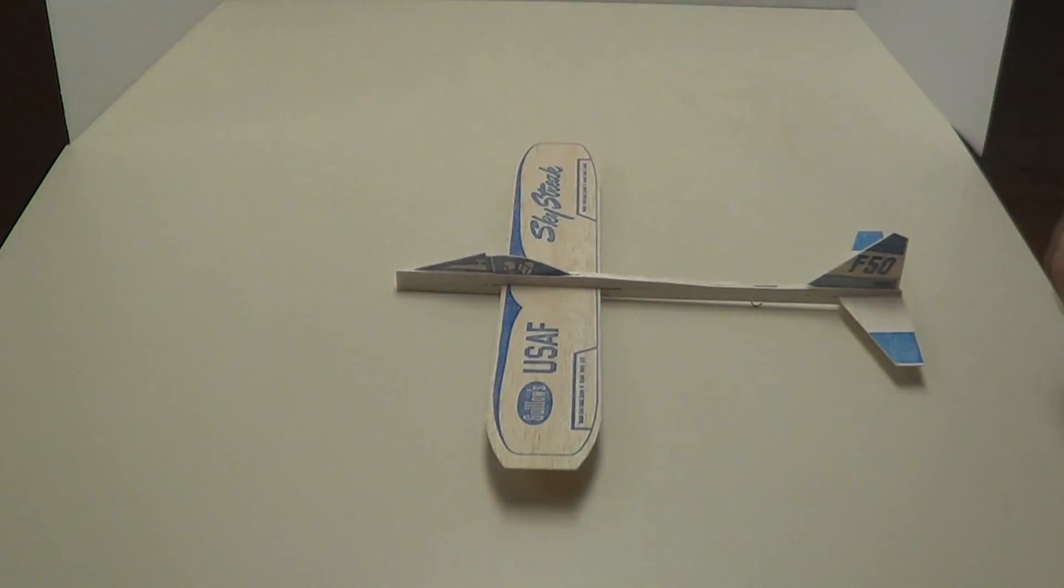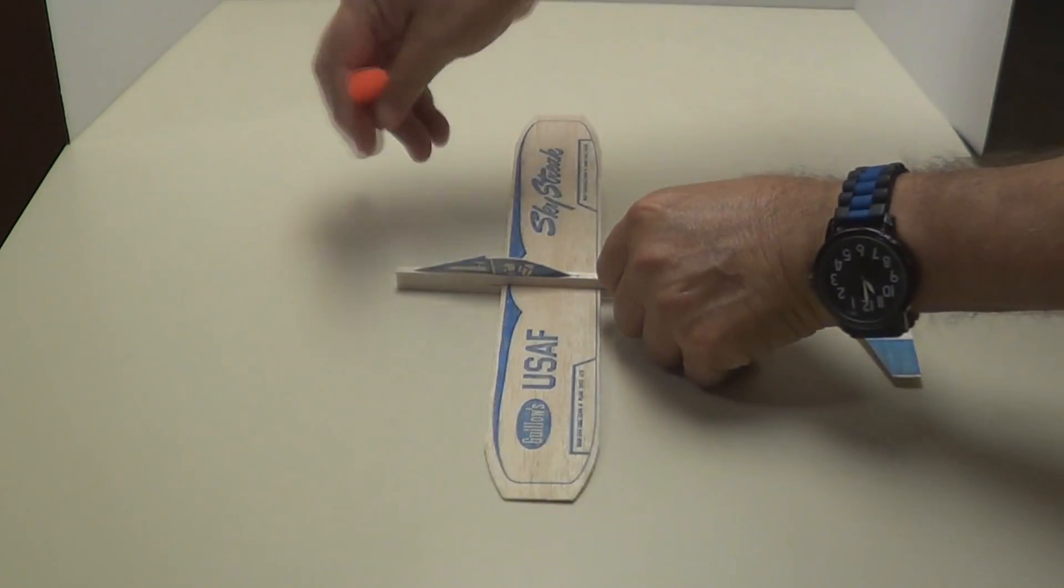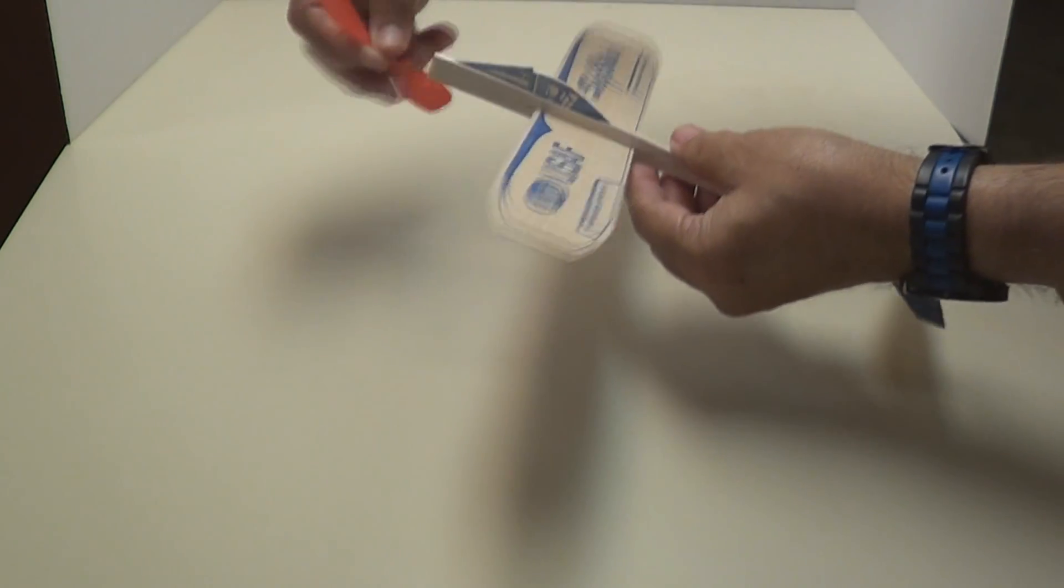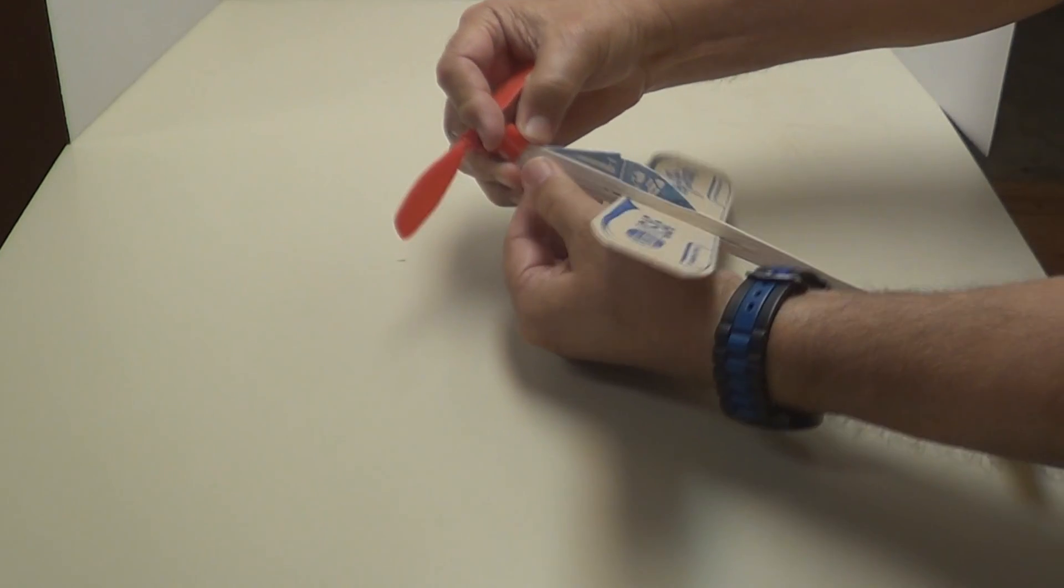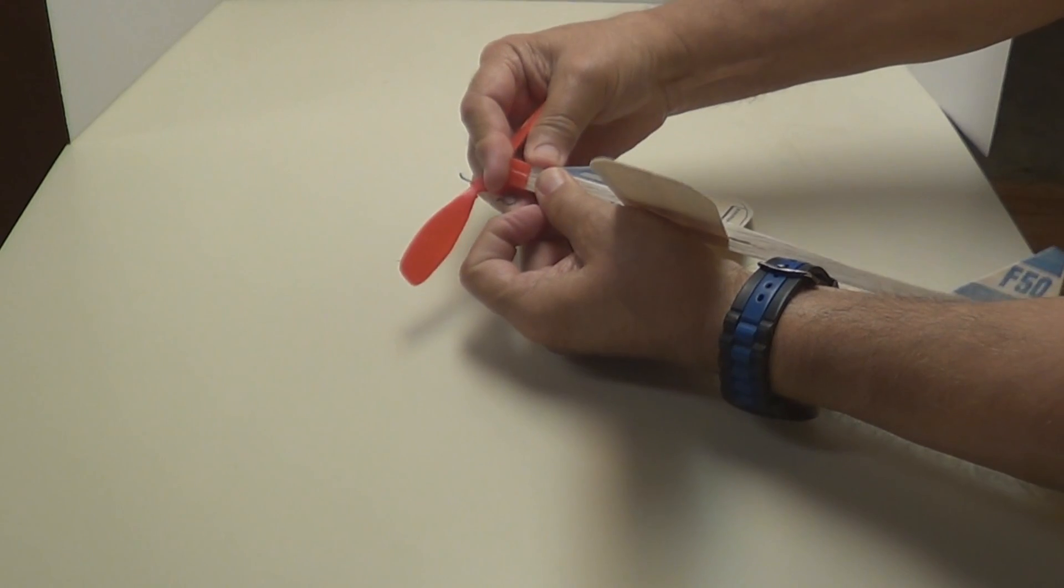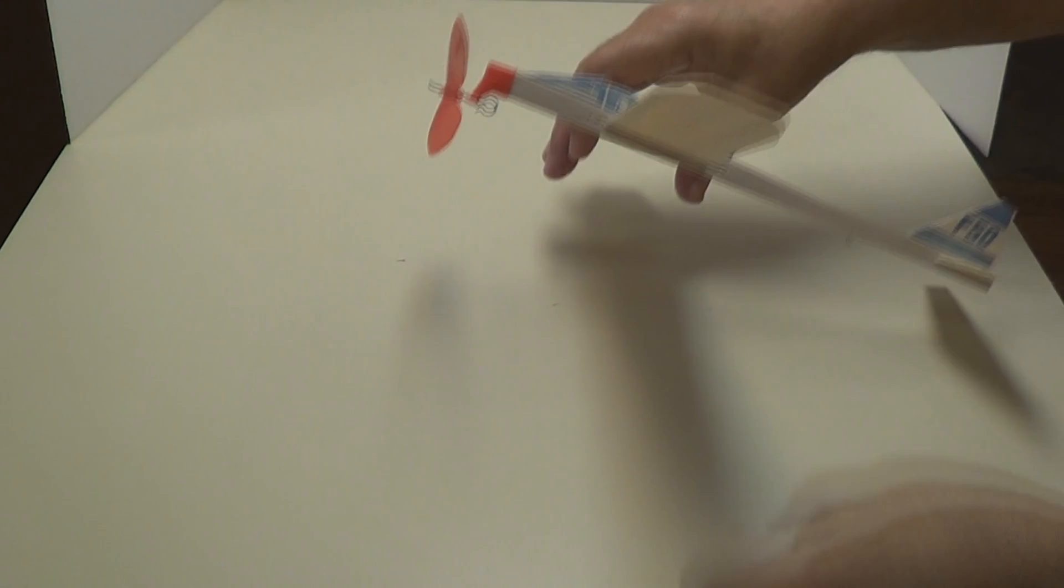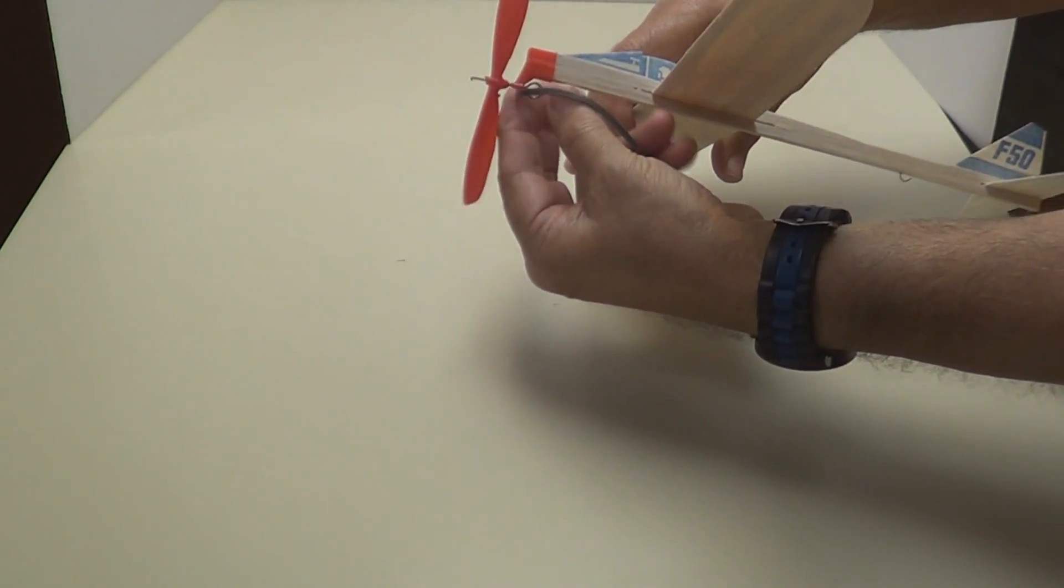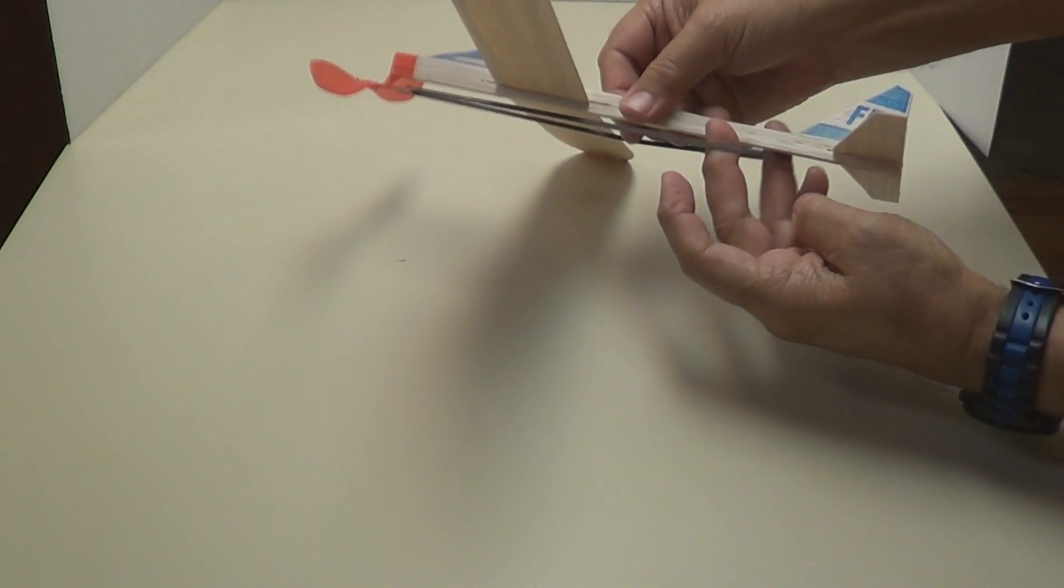Right there. And here's your propeller, it slips right on the front of the fuselage right here. Takes a little, there it goes, now it's in. Take your rubber band, it fits in that little hook on the front of the plane right there and on the back of the plane right there.